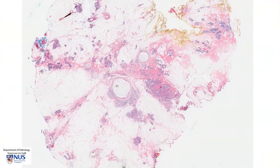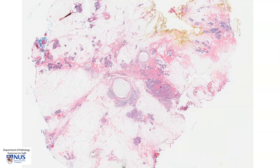In summary, this is an example of fibrocystic change in the breast. This is a benign condition as long as there is no significant atypical proliferation within the ducts or lobules. We have the cysts, we have the stromal sclerosis, and we have the focal areas of adenosis. Thank you.